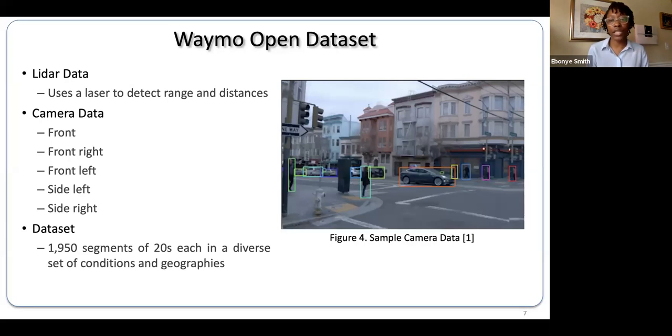In addition to that camera data, it also includes LIDAR data, which uses a laser to detect range and distance. The flexibility of motion prediction is that this experiment could rely solely on camera data or it could be used in conjunction with the LIDAR data.